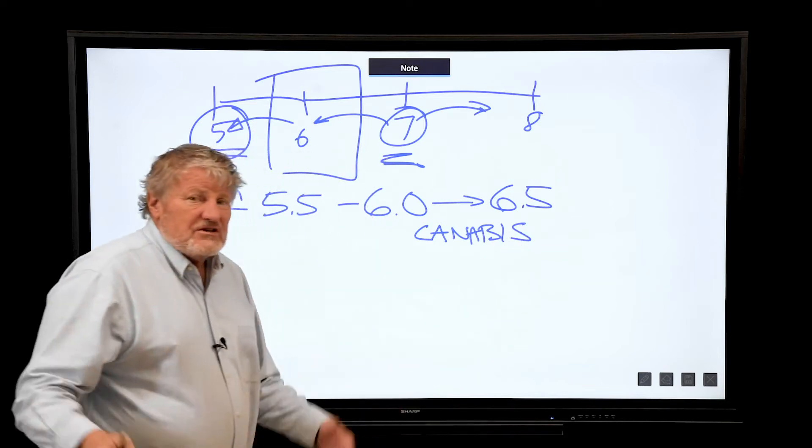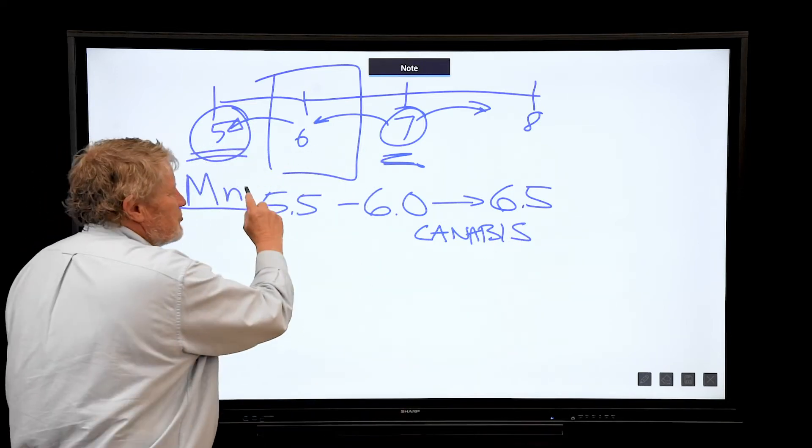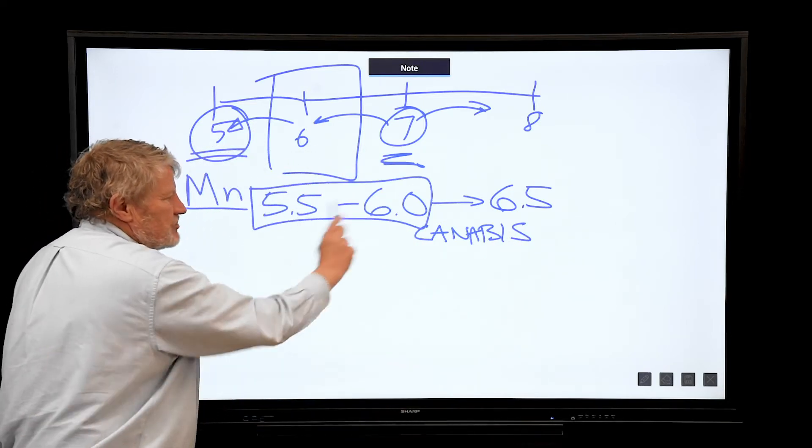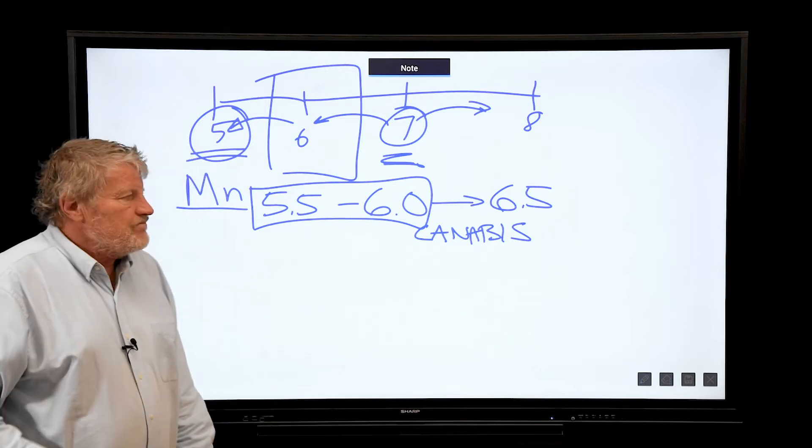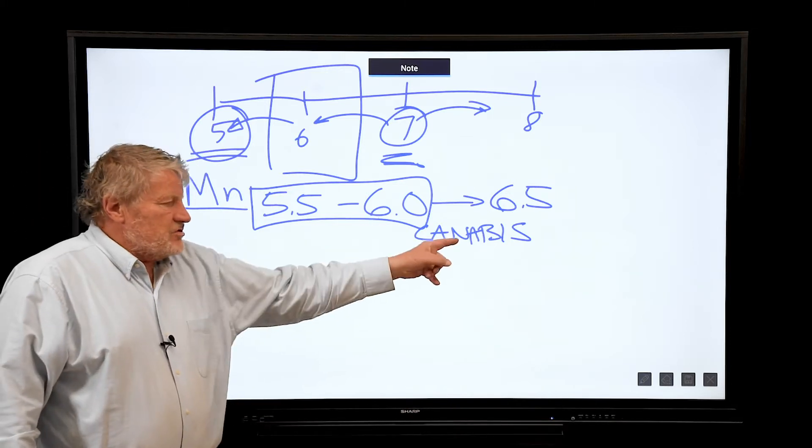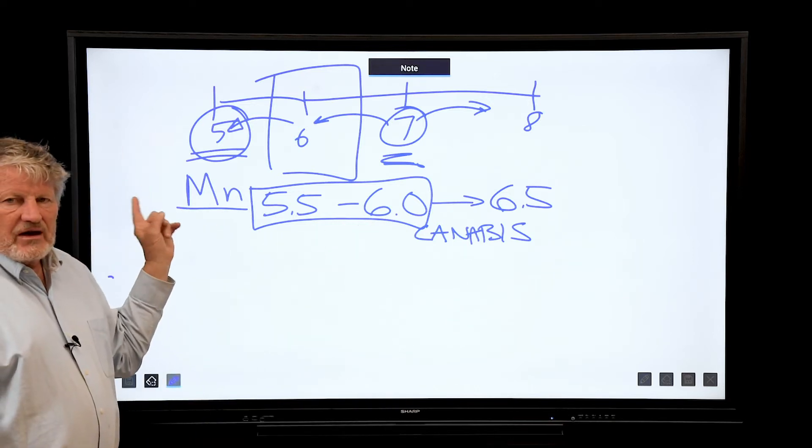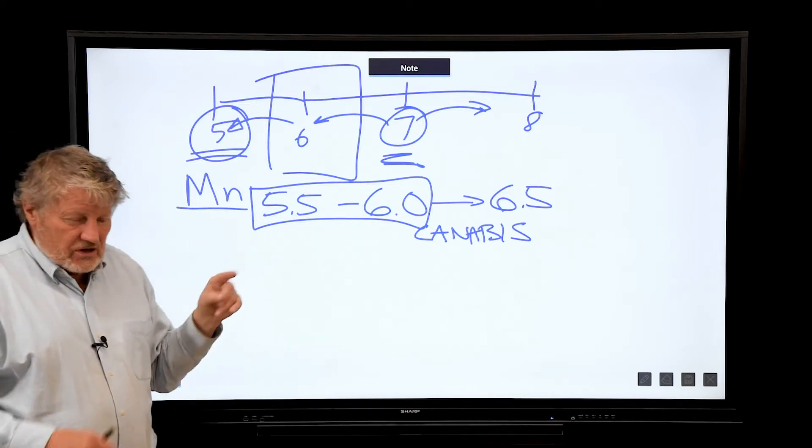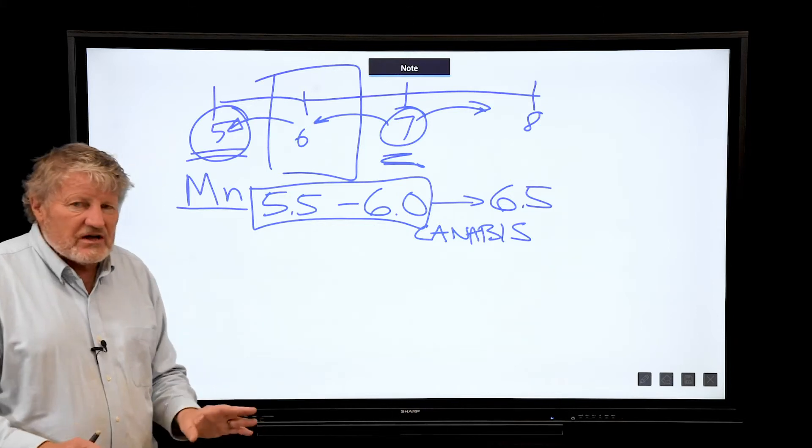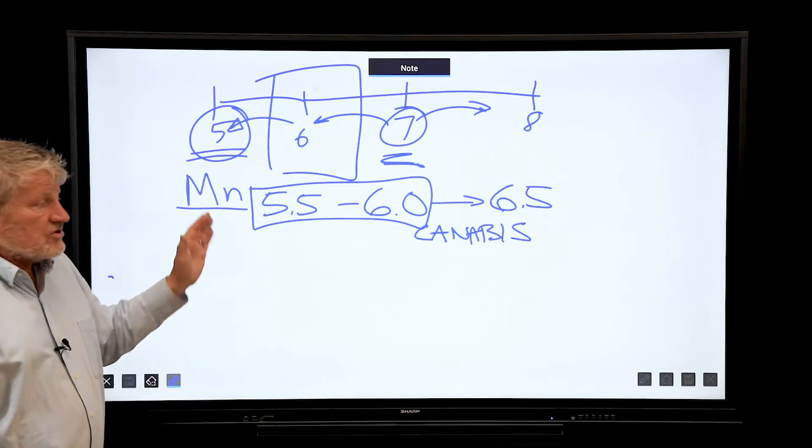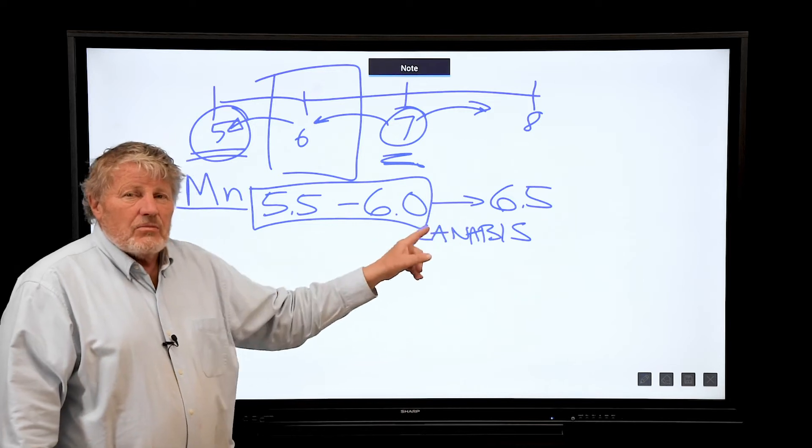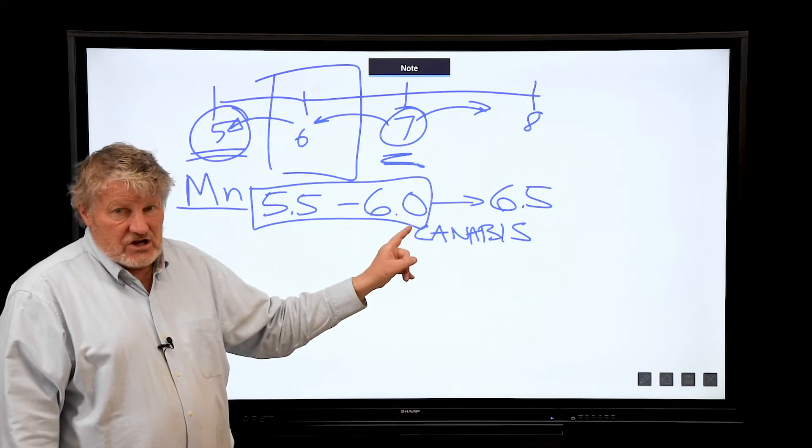Now what's the basis for saying that? If you've studied this in school, they say this is well known - 5.5 to 6. This slightly higher pH helps to ensure that you're not going to have micronutrient toxicity - little burned brown leaf edges, dark spots on the leaves, those are toxicities. So a slightly higher pH minimizes the chance of those.